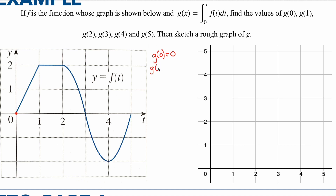g of one is going to be everything under the curve up to one. We're looking for the area under the curve at the point one, and this is a triangle. So think of the area as one half base times height: one half times one times two is going to be one. So from zero to one, the area of the curve is one.